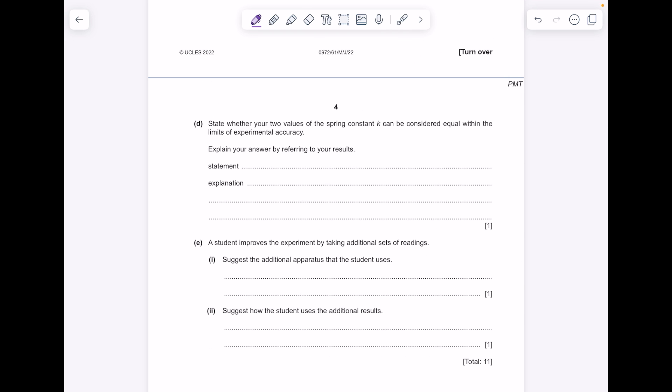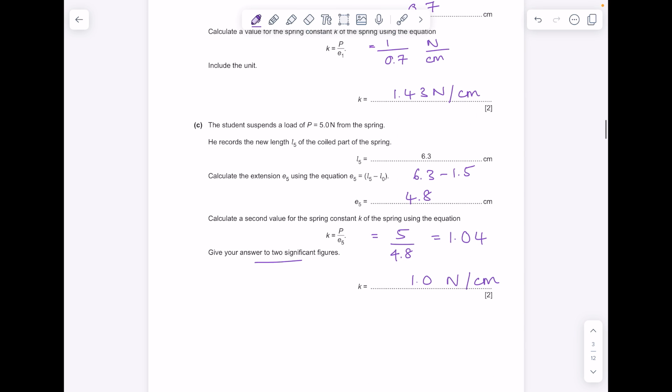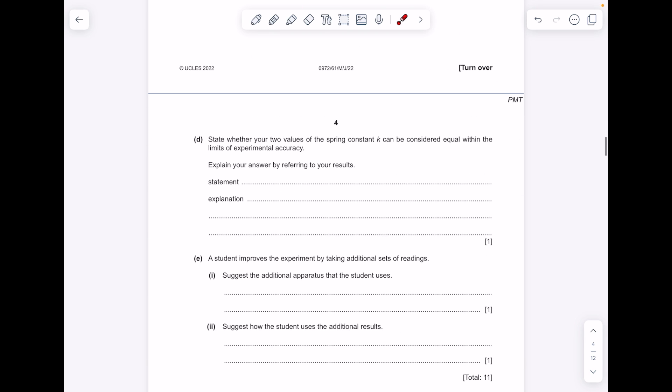State whether your two values of the spring constant can be considered equal within the limits of experimental accuracy. Explain your answer by referring to your results. So our two calculated values are 1.43 and 1.0. So to two significant figures it's 1.4 and 1.0 which are not particularly close to being the same. So I'm going to say no, I don't think they can be considered equal within the limits of experimental accuracy. The two readings differ hugely, 1.0 and 1.4.